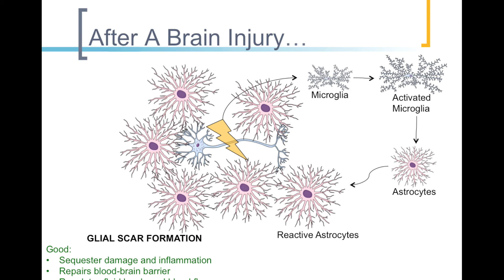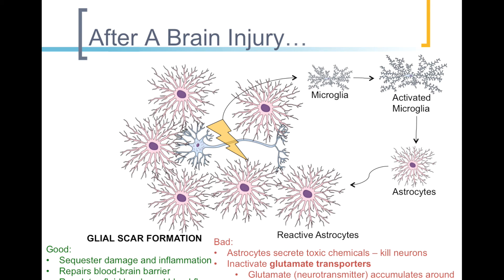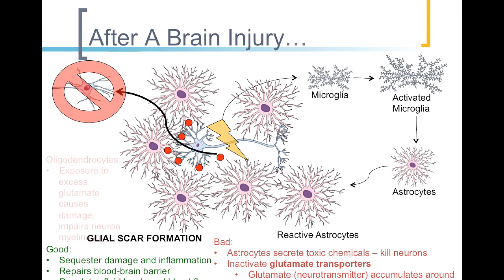However, if glial scar formation is severe or prolonged, astrocytes secrete toxic chemicals that both kill neurons and prevent proper glutamate recycling. This impaired glutamate cycling is toxic to neurons, as well as to the oligodendrocytes, which are then unable to myelinate neurons and further the whole cycle of death and damage.